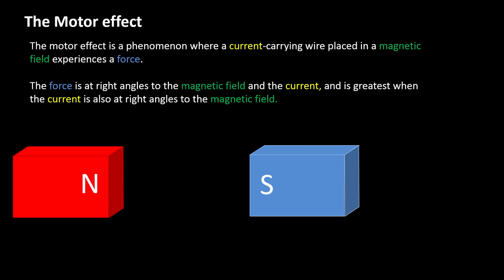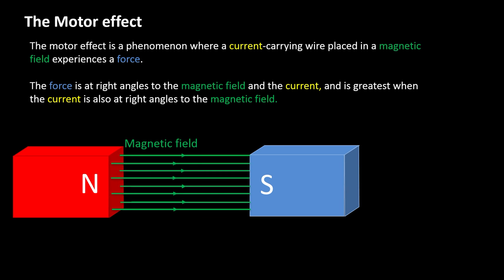Let's look at this in detail. I've got a pair of poles of a magnet here, north and south pole, and the magnetic field points from north to south — that's just a convention. I'm going to put the current in a wire through the magnetic field at right angles to it. What that does is produce a force that is at right angles to both of those things. So the force is at right angles to the magnetic field and the current. In this case the force is down.